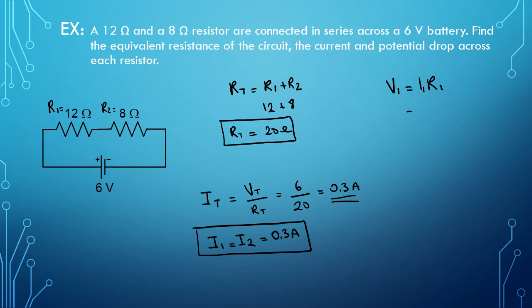So I know I1 is equal to 0.3 and R1 is equal to 12. So this is going to give me 3.6 volts.